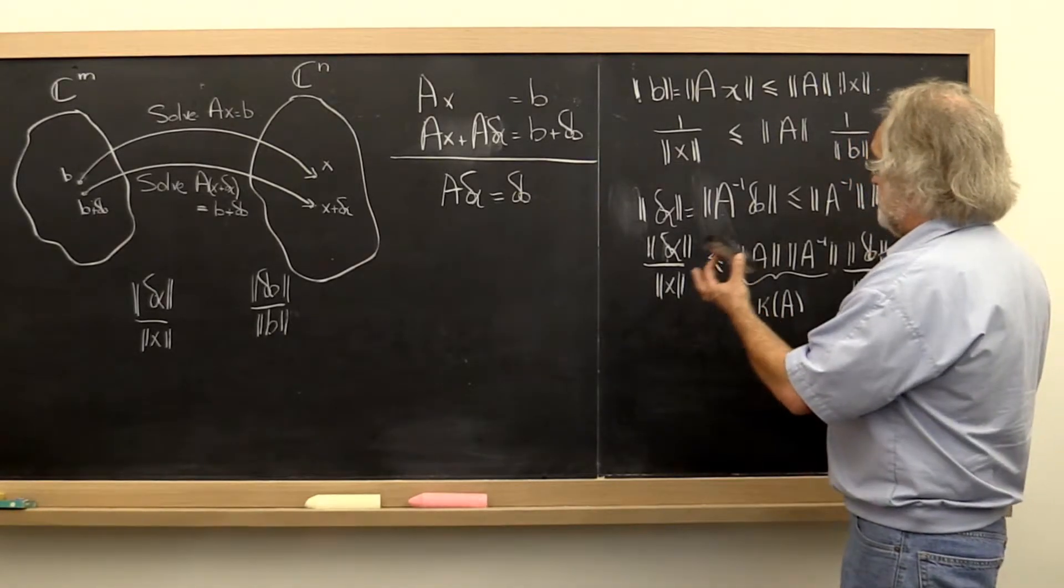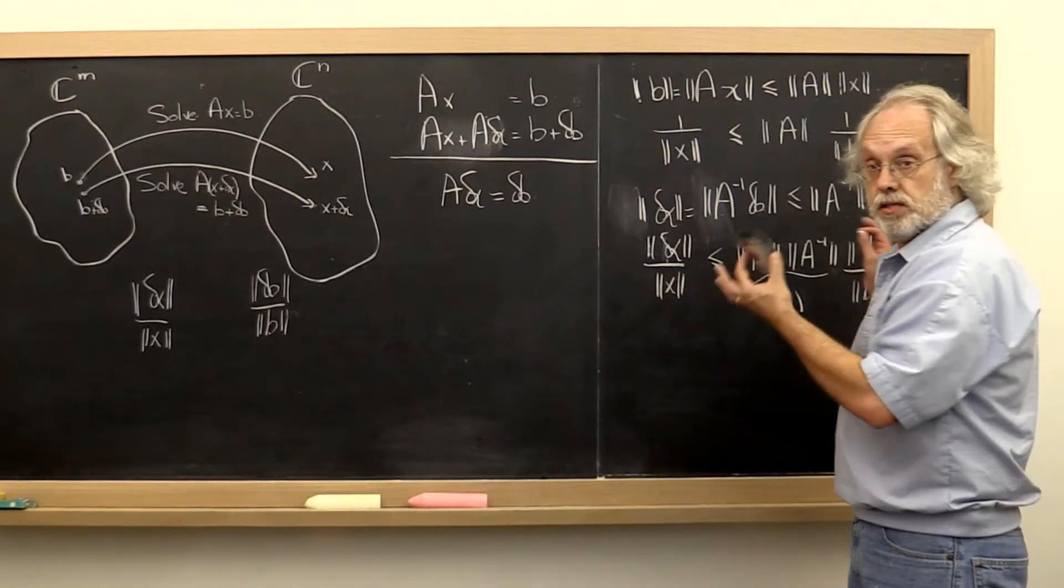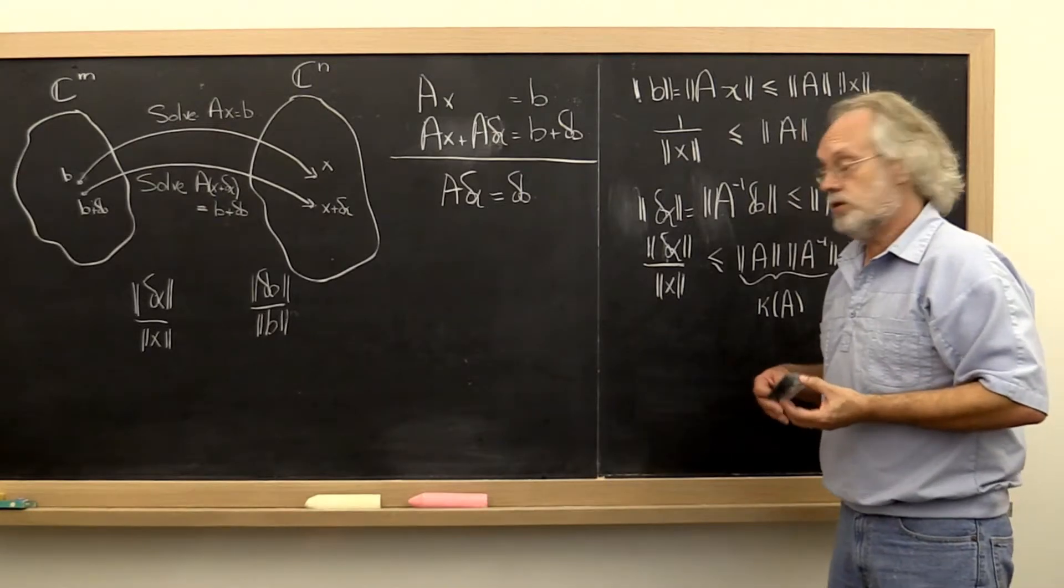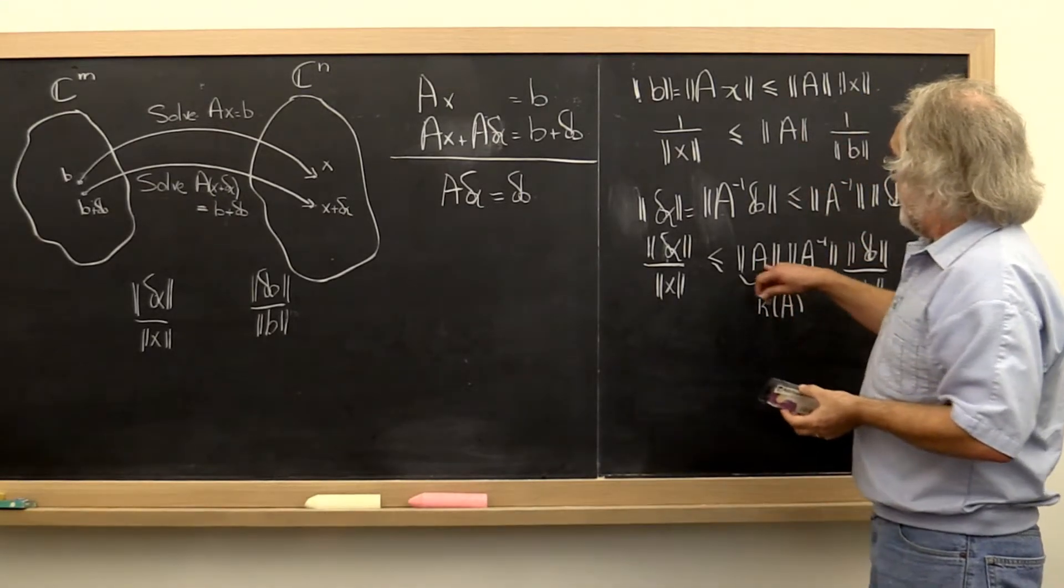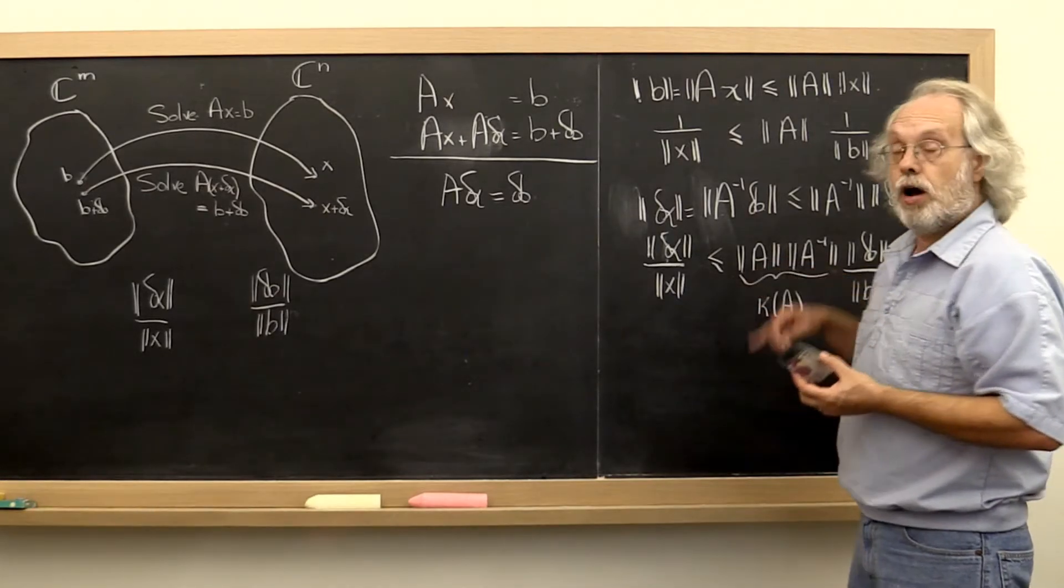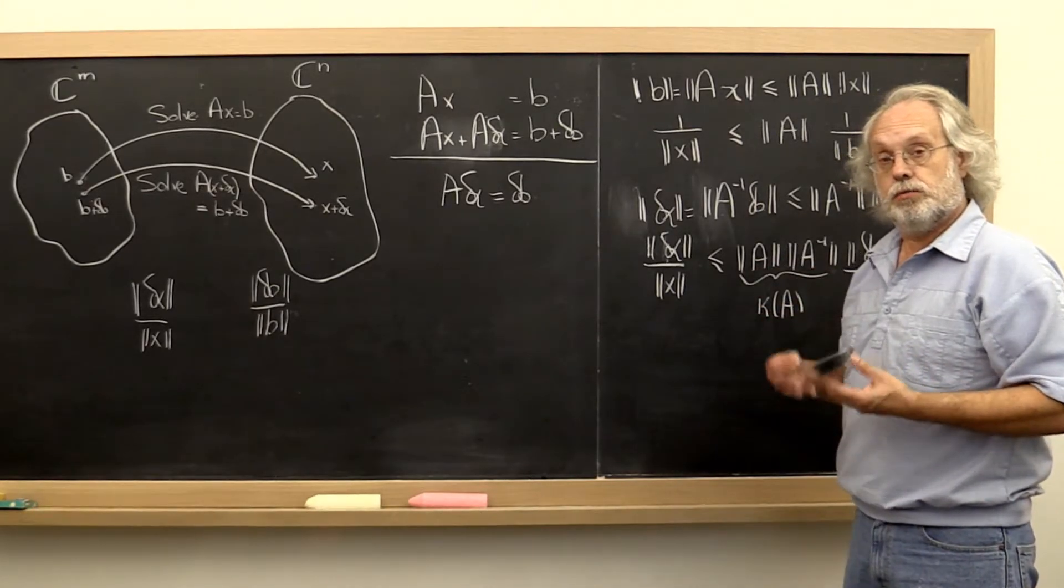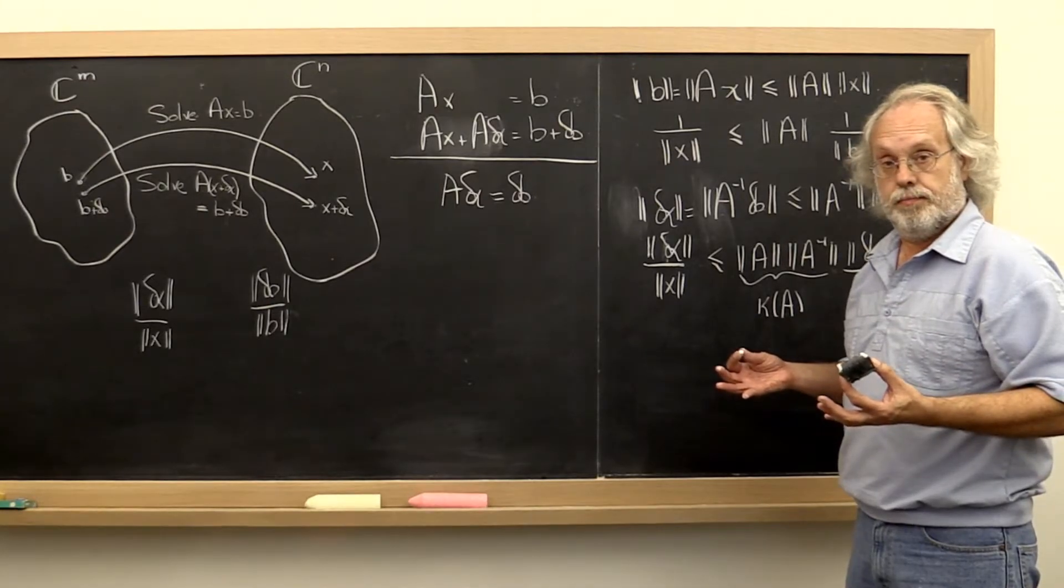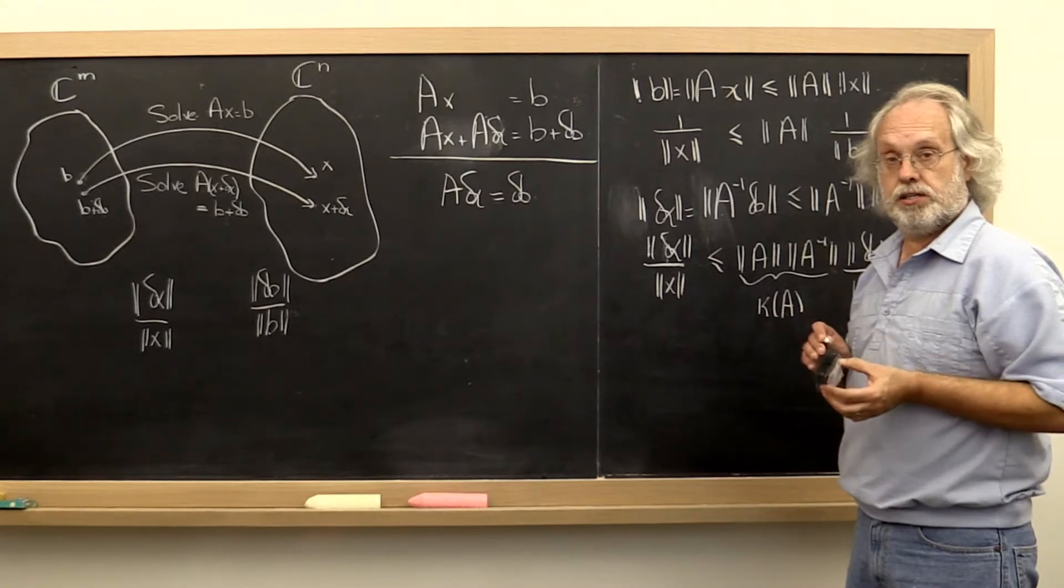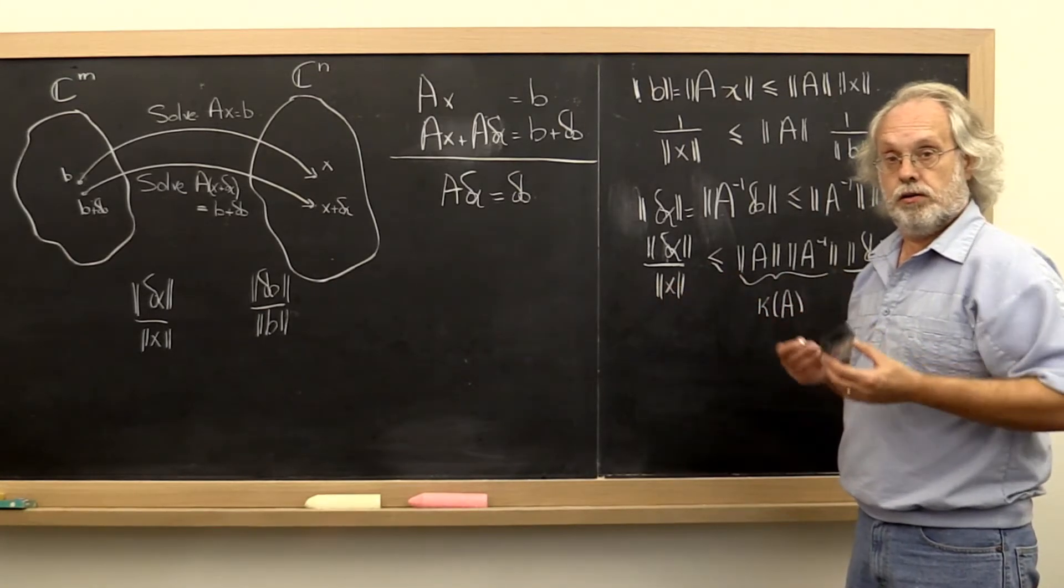So this is not a pessimistic view. This is something that could happen. Later in the course, you're going to find out that the condition number of A depends on how close A is to being singular. All of these things will start falling in place as we move on through the course.